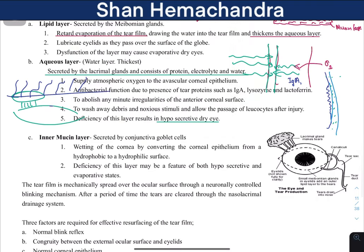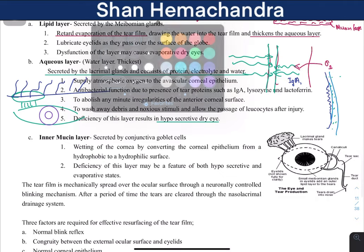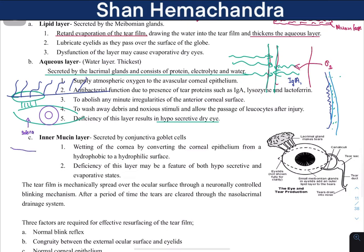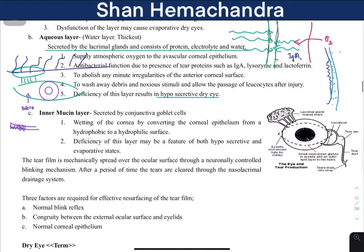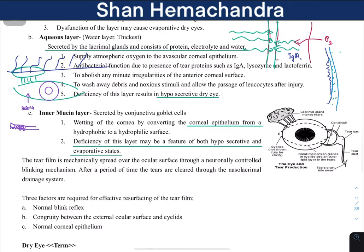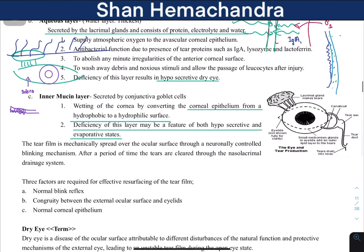Finally, the inner mucin layer. Here is the cornea and the sclera. Over the sclera lies the bulbar conjunctiva, which has goblet cells. The goblet cells produce mucin. If this layer is deficient, it can be due to both hyposecretive and evaporative states. The importance of the mucin layer is that it converts the corneal epithelium from a hydrophobic to a hydrophilic surface, allowing water to interact with the corneal surface.